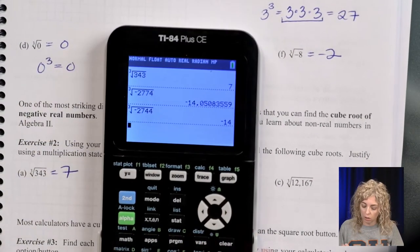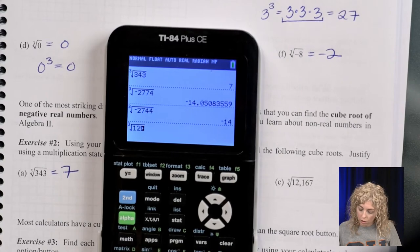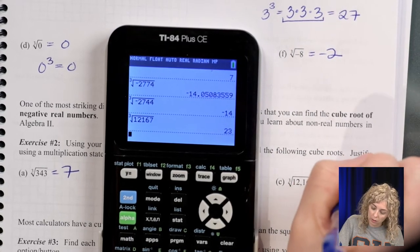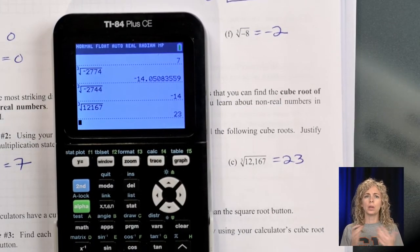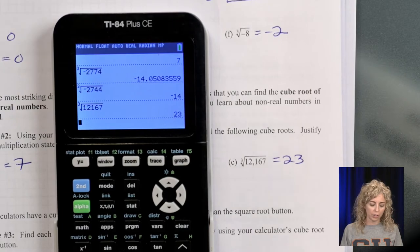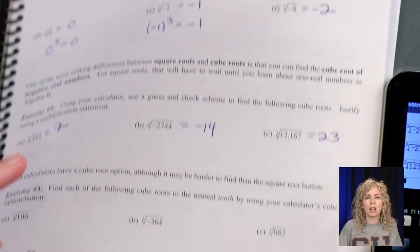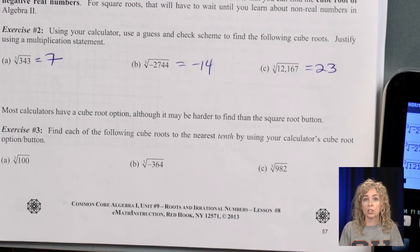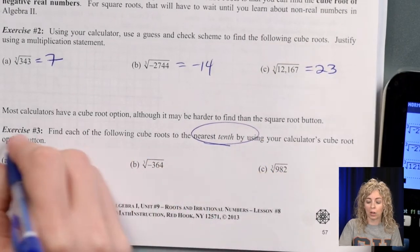Math, number 4, negative 2744. I had an extra 7 in there. So it's negative 14. And then the cube root of 121167 is 23. So we can find the cube roots using the calculator. Now down at the bottom, these are not perfect cubes, so there is a chance that you can get a decimal and you'll have to round. But we're going to skip that.